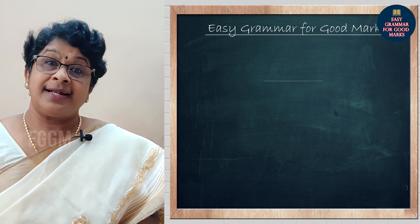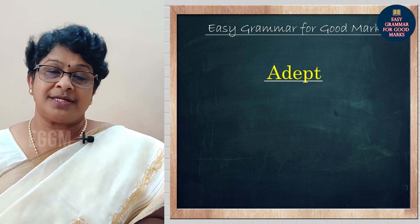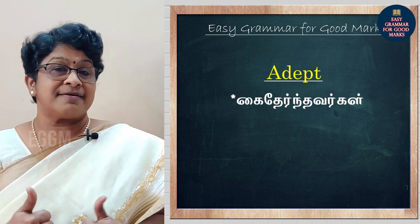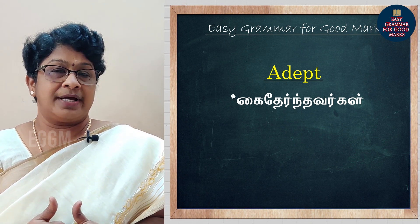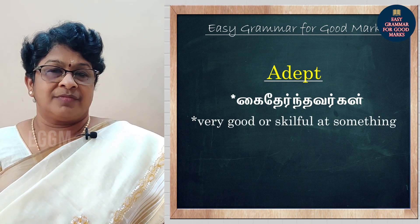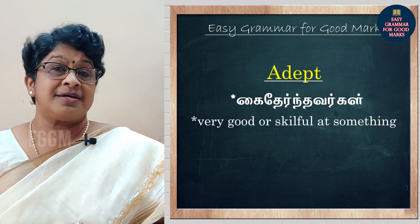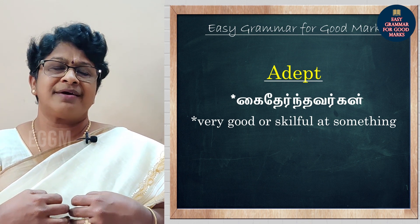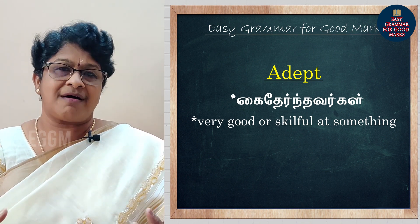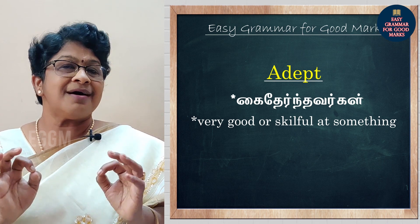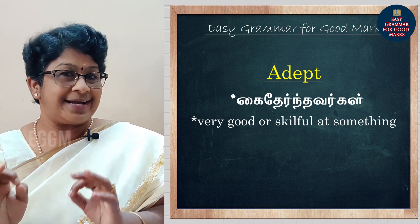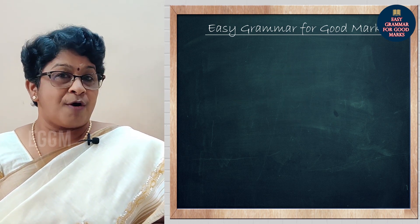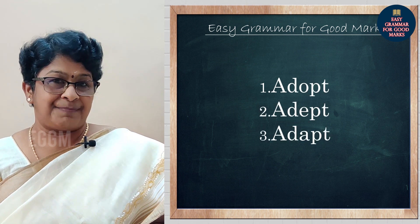Adhe marri, adept — a-d-e-p-t. Adept nal e — kai therundha vargal, ooru extraordinary skill. She is an adept in playing guitar. Guitar vahasikatle, bayaeng excellent harukkha. E maandhaa abdi naaam vetchi karudu — adept. Ippo unangalik puriñjirikkuo adopt, adapt, and adept.